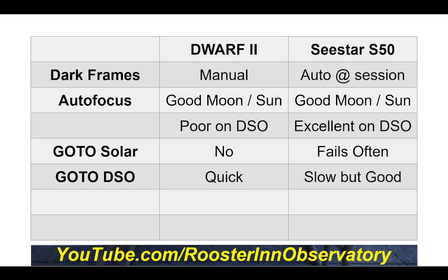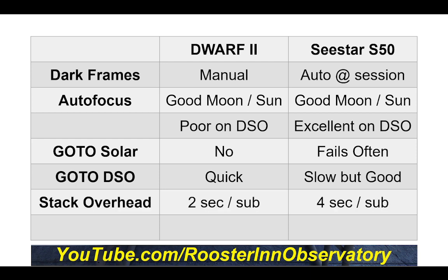GoTo for DSO targets: the Dwarf 2 is very, very quick. The Sea Star is slow but good — not only does it find the target, it centers it, going through extreme pains to do so, whereas Dwarf 2 just gets it and moves on. On stacking overhead at 10-second exposures, the Dwarf has about 1.4 to 1.6 seconds between frames, while the Sea Star on a very good day is still about 4 seconds, so it takes longer to capture as many frames.